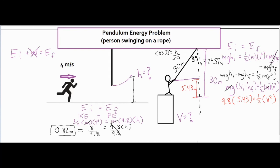And if I multiply both sides by 2, it's going to cancel out the one-half, bring a 2 over here. We're going to finish off by square rooting both sides. So I'm going to square root the product of 2 times 9.8 times 5.43, and I get a final velocity of 10.3 meters per second.